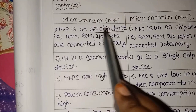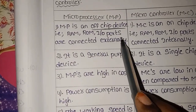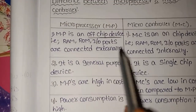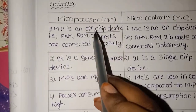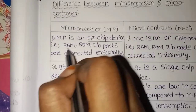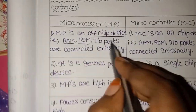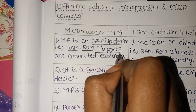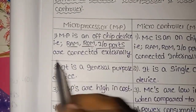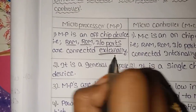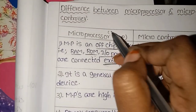Microprocessor is an off-chip device. That is, RAM, ROM, and Input/Output Ports are connected externally. Microprocessor is an off-chip device — RAM and ROM are used to store data. Input/Output Ports are connected externally, meaning they function as external connections. This means the microprocessor does not have internal storage capacity.